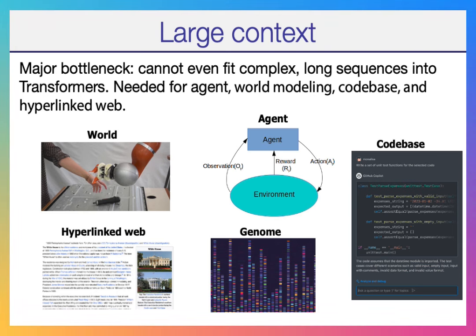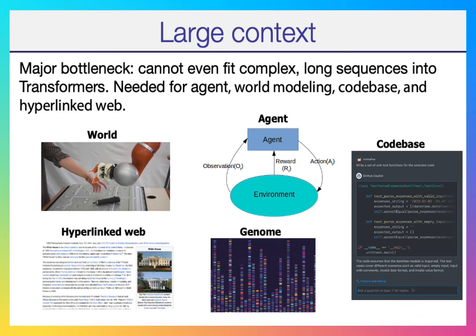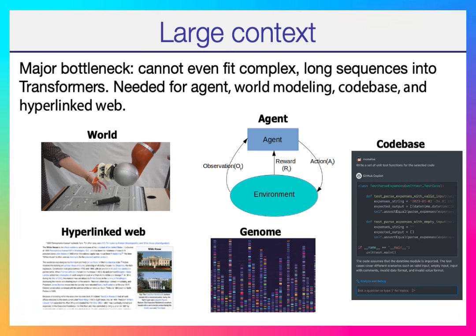Now I want to talk about sequence length, which was a major bottleneck in language models and multi-modal models. We want to model the world — not just text. We have videos, long trajectories for AI agents, entire code bases, hyperlinked websites, or genome sequences. All these require hundreds of millions or even billions of tokens per sequence, and we can't fit this into a standard transformer because transformer attention has quadratic memory cost.